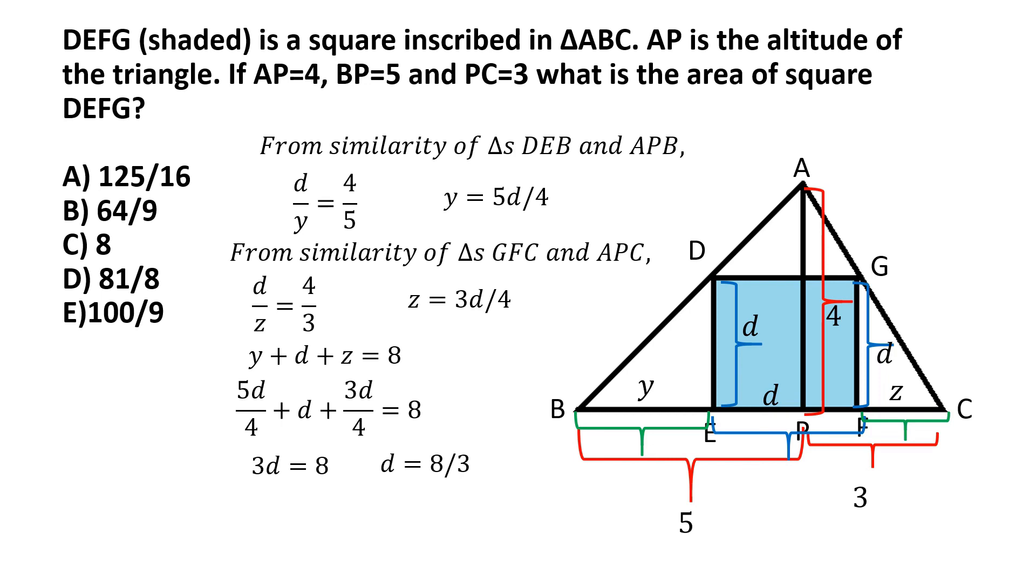And then what's the area of the square DEFG? Well, it's simply the square of its side. So it's simply d square, and d square is 64 by 9. So the correct choice or the correct answer to this question will be option B, 64 by 9.